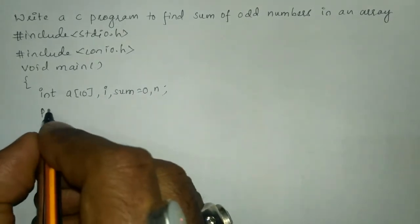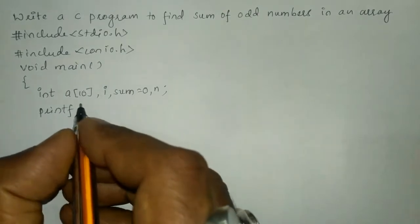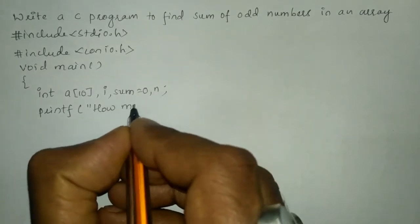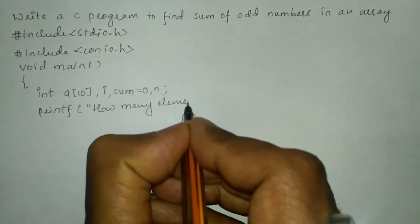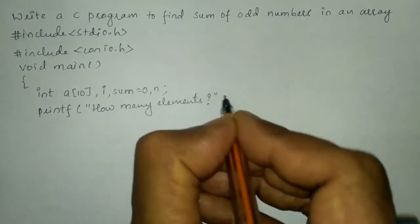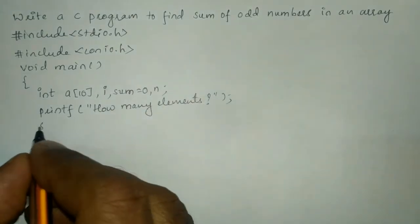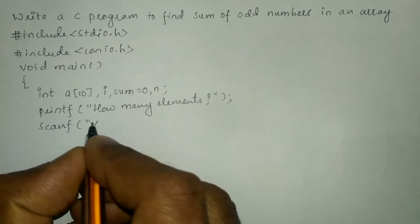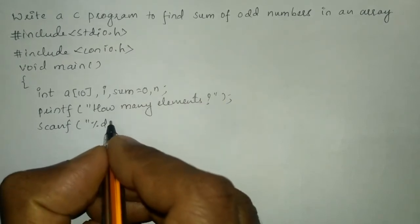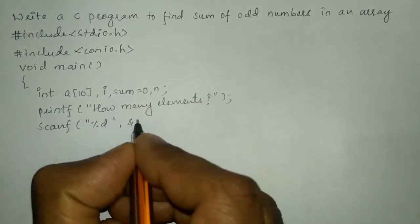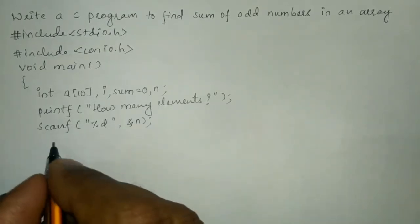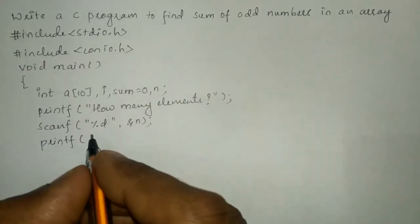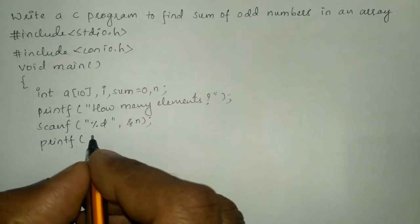Now let us ask the user to enter how many elements using the printf function. Here I will write 'how many elements' and put a semicolon. We will receive the response from the user through the keyboard using scanf function — write format specifier %d in double quotation marks and ampersand of n and semicolon.